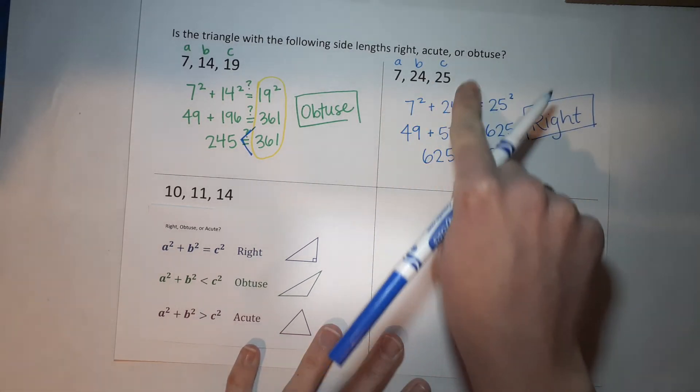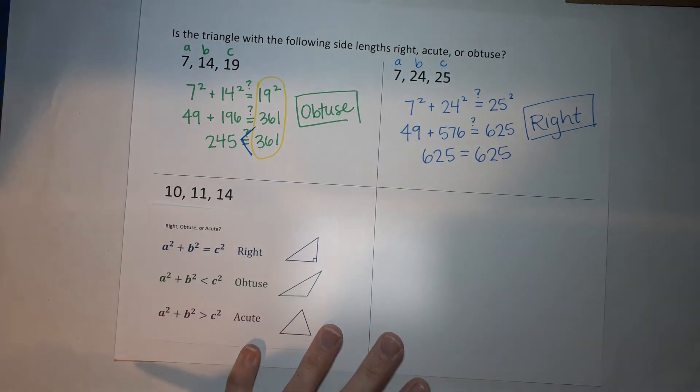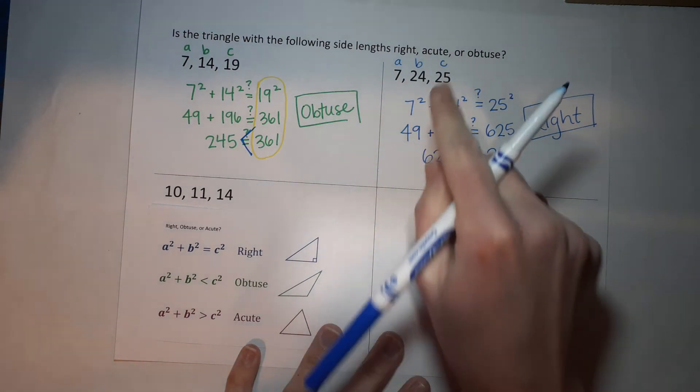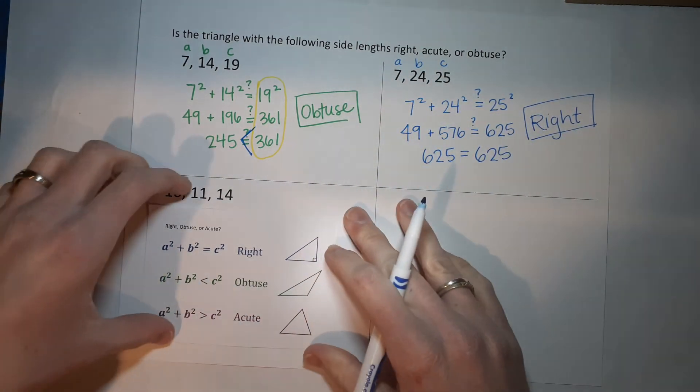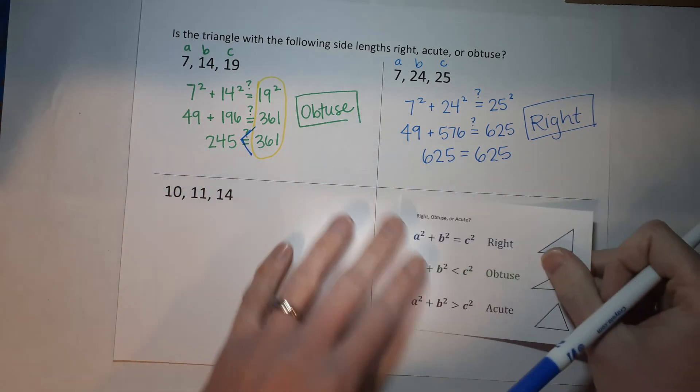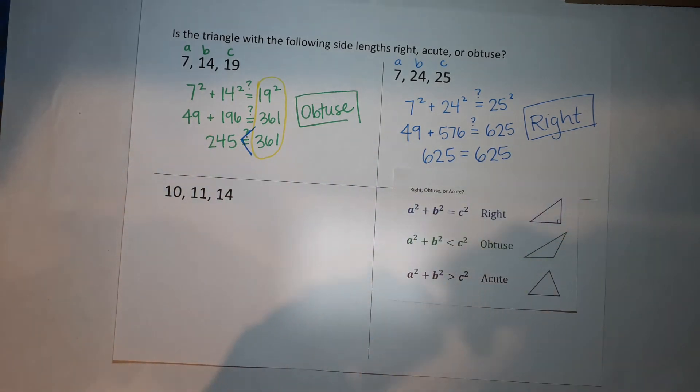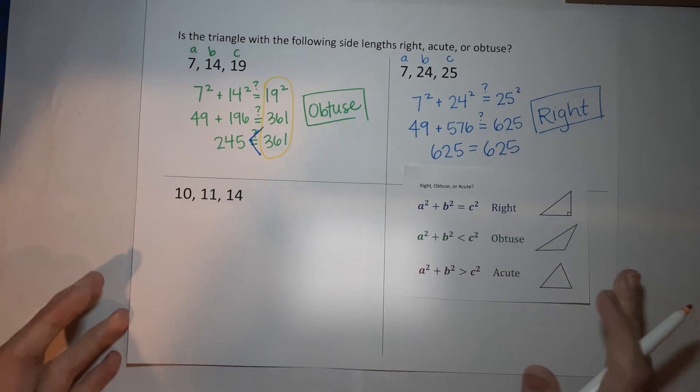That also means this is a Pythagorean triple. I linked that video at the beginning if you want to go see what that means. It's exciting stuff. Like if it's Saturday night and you could be hanging out with your friends or watching that video, you should probably watch that video. Okay, here we go.